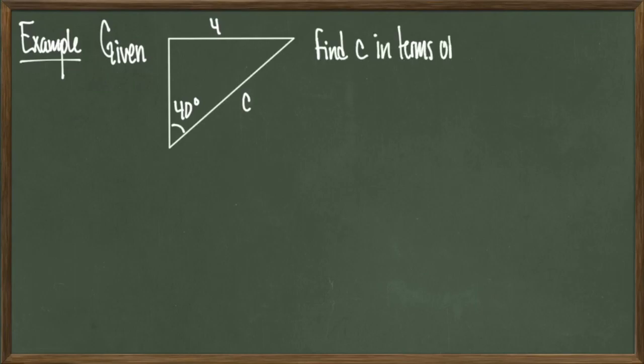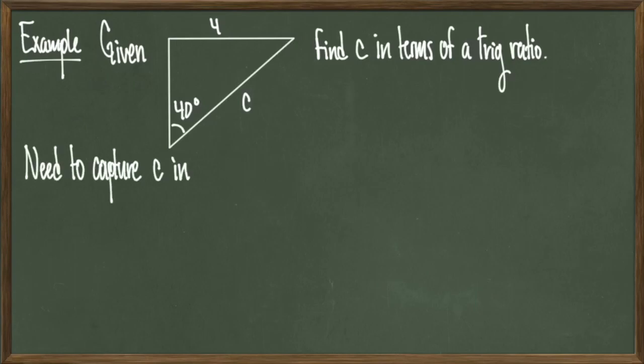In this next example, we're given this triangle with an angle of 40 degrees, a side of 4, and a hypotenuse of c, and we want to write c in terms of a trig ratio. So we need to somehow capture c in a trig ratio, and to do that we need to see what sides are available to us. We have 40 degrees, opposite the 40 degrees we have a side of 4, and we have the hypotenuse of c.